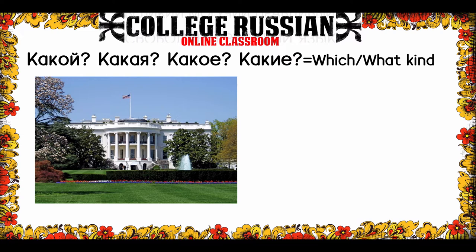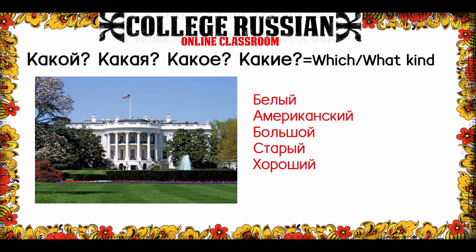We're going to get some speaking practice. I'm going to show you some pictures and I want you to try describing them. Это какой дом? Как вы думаете? Это чёрный дом или белый дом? Это русский дом или американский дом? Это старый дом или новый дом? Это маленький дом или большой? The ways you might describe it: белый, американский, большой, старый, хороший. Хотя Дональд Трамп думает, что это не хороший дом, и он думает, что это не большой дом. Интересный факт.